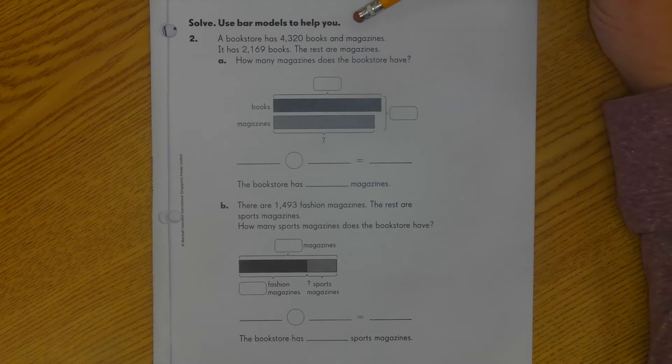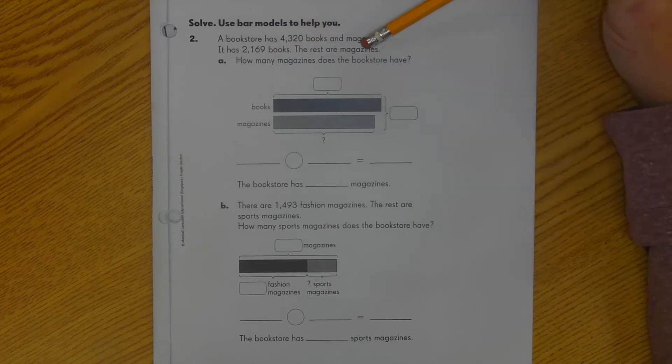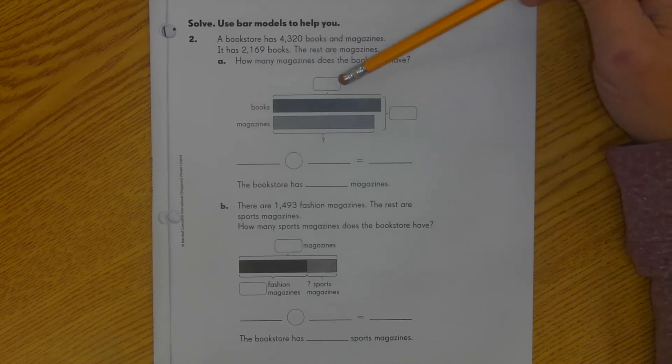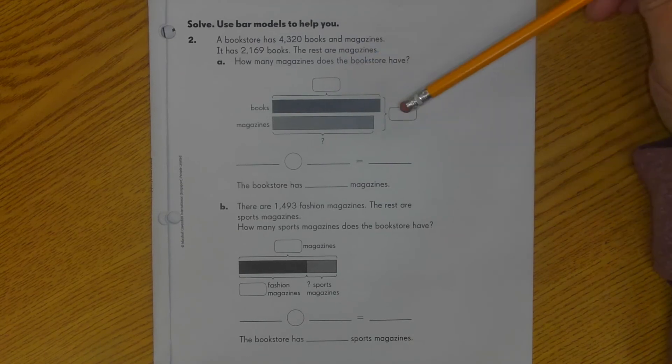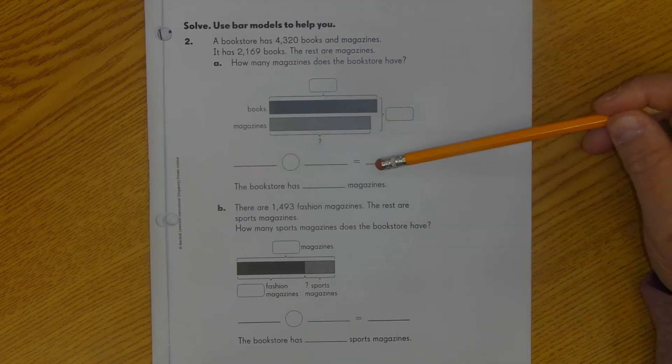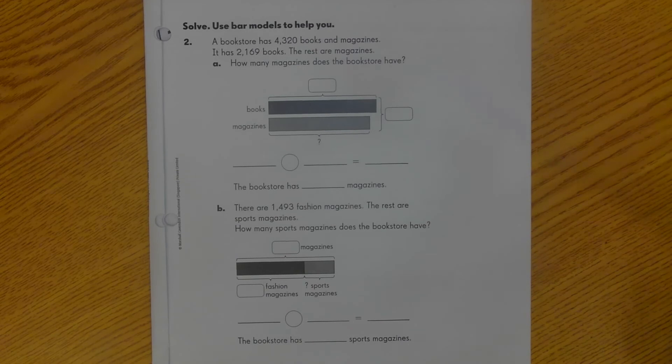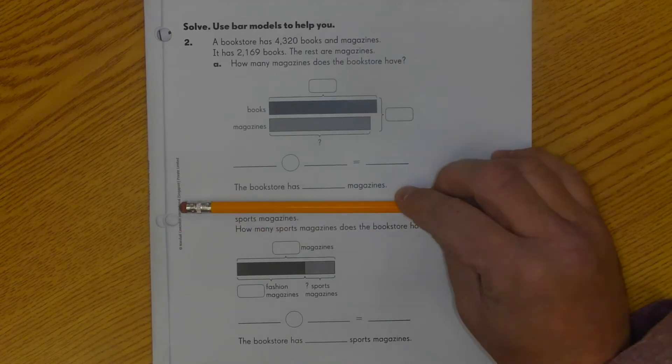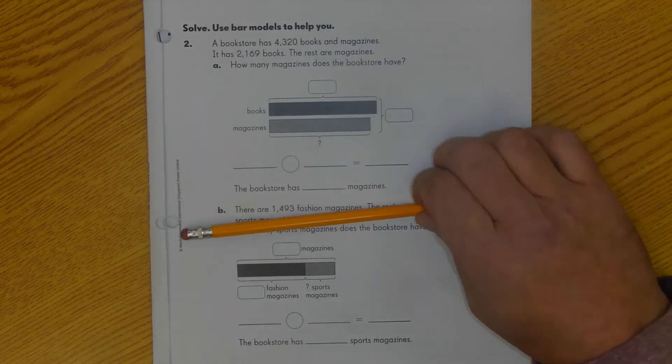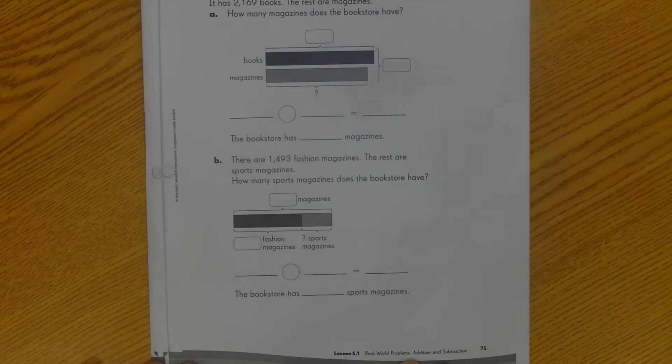So the first thing I'm going to do is just read through this to you because that's going to spark in my brain some things that you need to know. Solve, use bar models to help you. A bookstore has 4,320 books and magazines. It has 2,169 books. The rest are magazines. How many magazines does the bookstore have? Then I have my bar model set up here. I've got missing number boxes. So I know I'll need to fill in numbers there and there. And I'll also need to fill in the question mark.